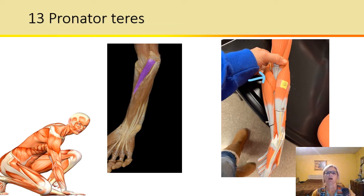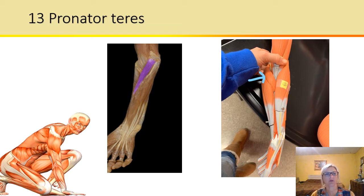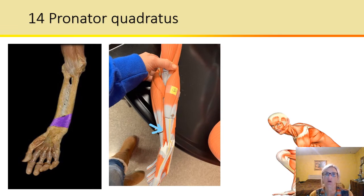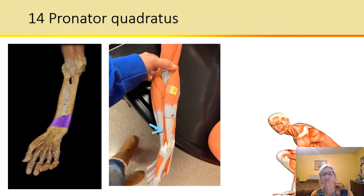So this pronates the forearm — pour out that soup. So pronator quadratus: quad means four, and of course we know what pronation means. This pronates the forearm and it is four-sided.